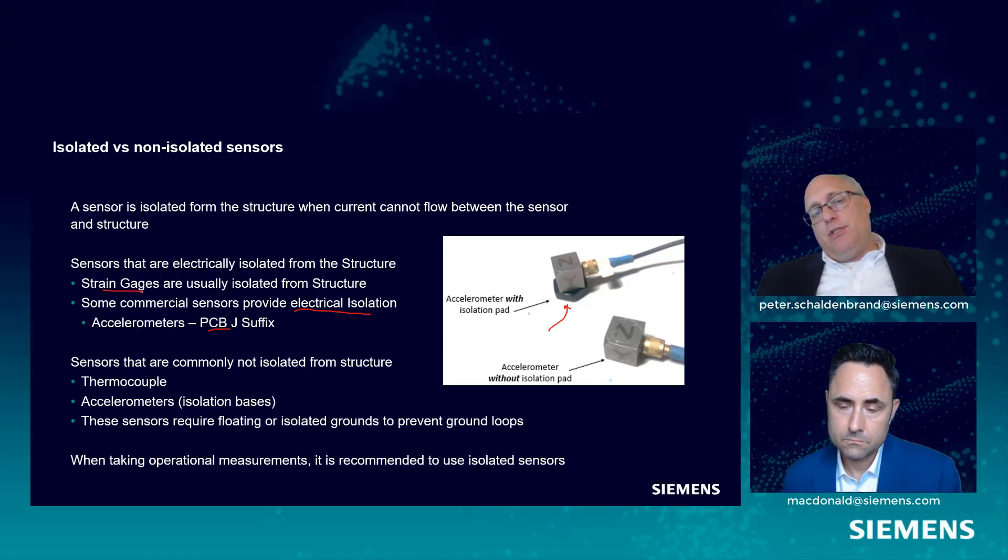Now, other transducers where you could see things, strain gauges are usually isolated because there's like a surface that they're put on. They're not quite directly on the metal surface of the test object. But yeah, in general, you want to isolate your sensors so there's no additional path to ground, no electrical current that can flow between the two. Does that kind of make sense to you, Scott? Yeah.